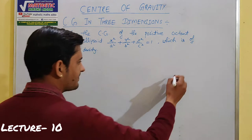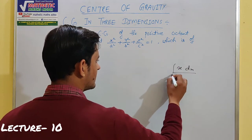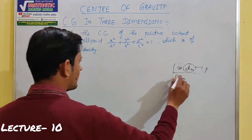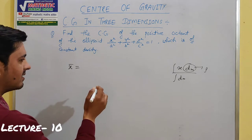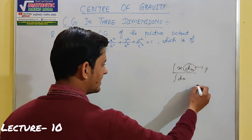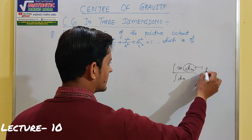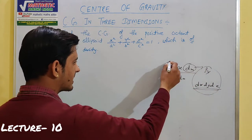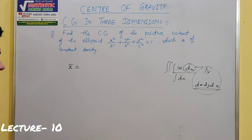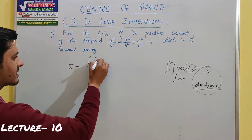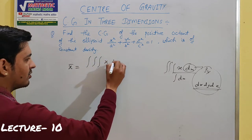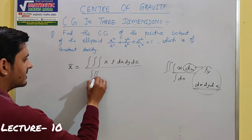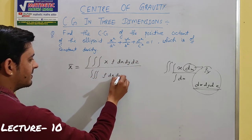Normally, what is the formula? x̄ = ∫x dm / ∫dm. Here dm (mass) is given by density into volume. We have three dimensions of geometry, so volume is expressed as dx dy dz. Since density (rho) is included, triple integration is used: x̄ = ∭x·ρ dx dy dz / ∭ρ dx dy dz.